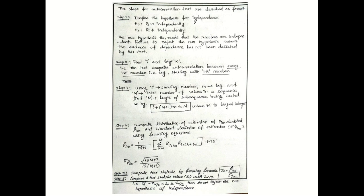Let us apply the autocorrelation test to check whether these random numbers satisfy the property of independence. The first step is to define the hypothesis: H0 is that Ri is independent in a sequence, and H1 is that the random number Ri is not independent in a sequence.